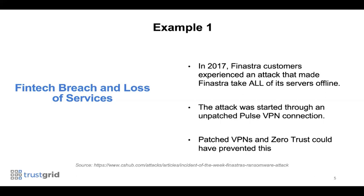Given that their customers were banks depending on Finastra services to run their entire business, the impact across the sector was enormous. The attack started through a VPN breached due to a lack of timely patching — a known issue that was exploited. Had there been proper patching, the breach probably wouldn't have occurred. Beyond that, if zero trust architectures had been in place, the blast radius would have been eliminated or limited to a specific server, and their entire customer base wouldn't have been impacted.